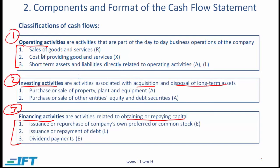I want to make a note here that operating activities in the context of the cash flow statement is not exactly the same as the operating part of the income statement. On an income statement under the operating segment, you might see items such as gain on sale of equipment — that appears as an operating item. However, on a cash flow statement, the cash related to the sale of equipment would show up as an investing activity.